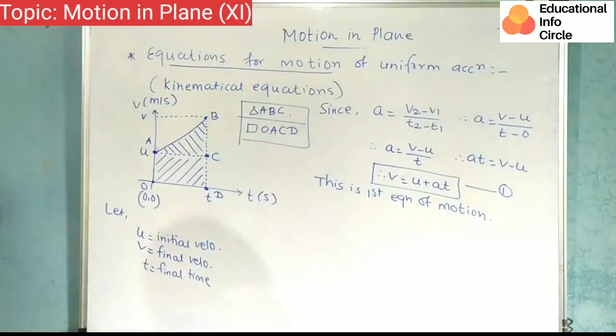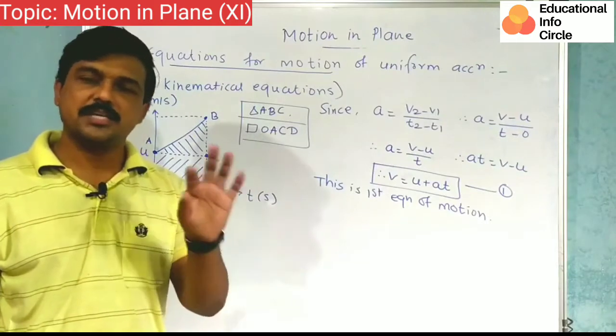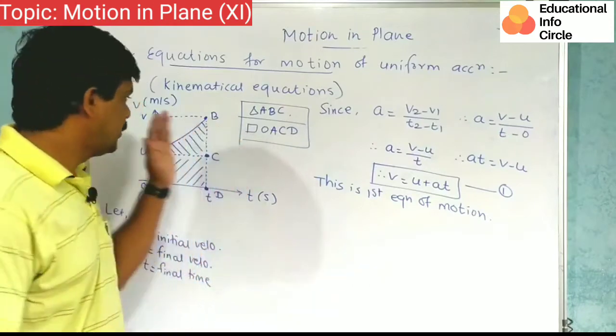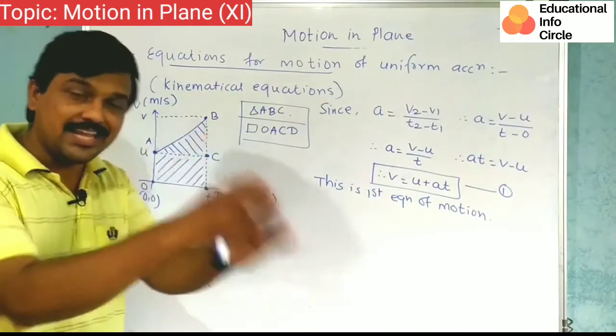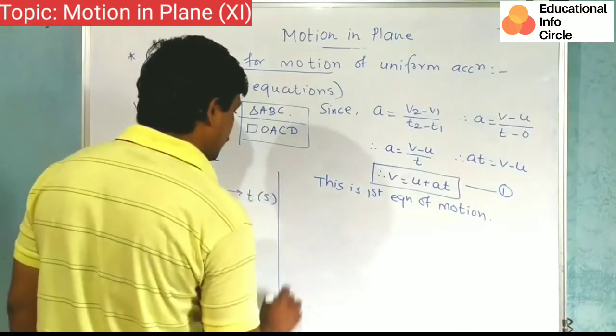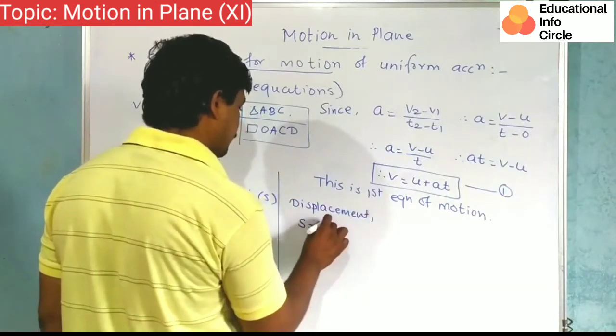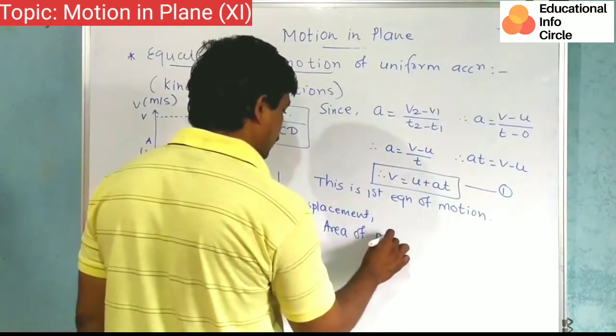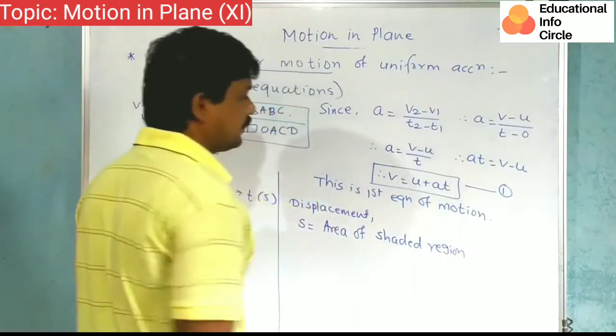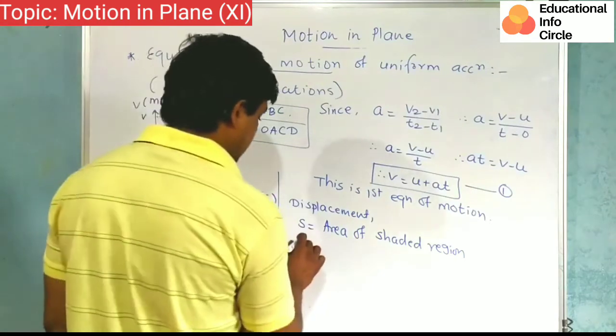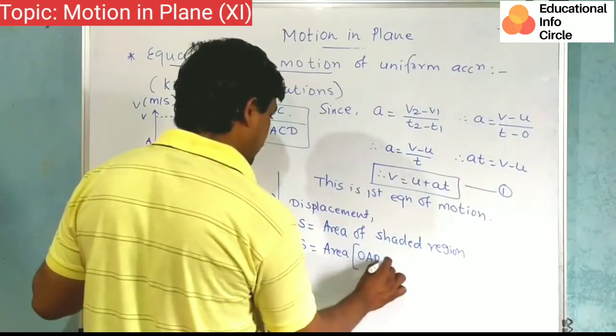Alright, now if I want to find displacement. Displacement means velocity times time. So velocity and time multiplication means find the area of this shaded region. That's what displacement means. So displacement, s is equal to area of shaded region, which means s is equal to area of OABCD.